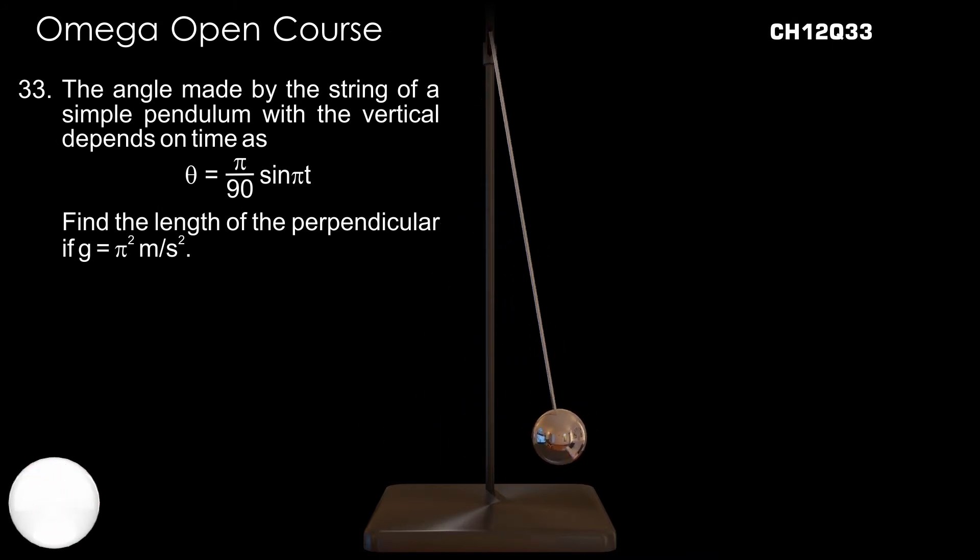The angle made by the string of a simple pendulum with the vertical depends on time as theta is equal to pi by 90 into sine pi into t. Find the length of the pendulum if g is equal to pi square meter per second square.